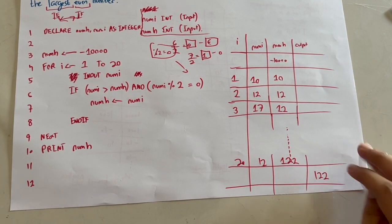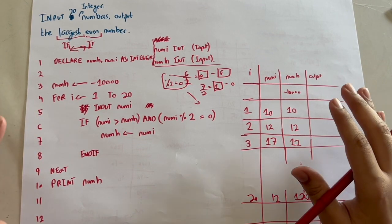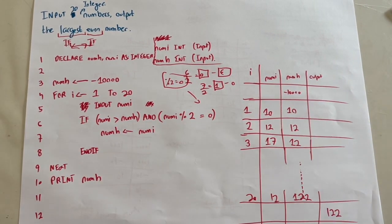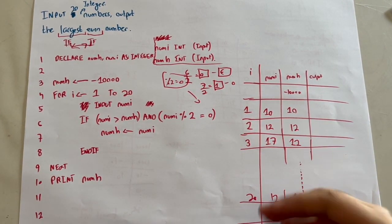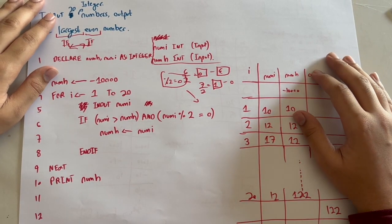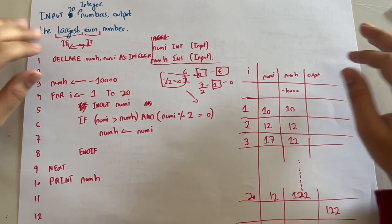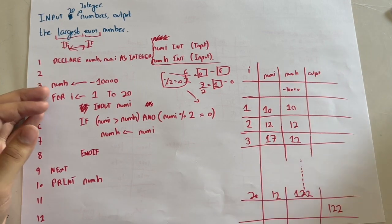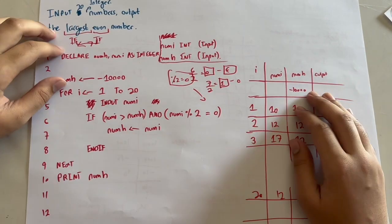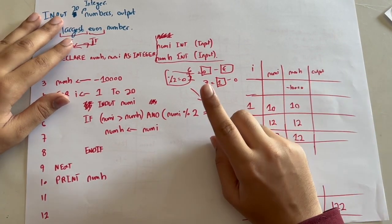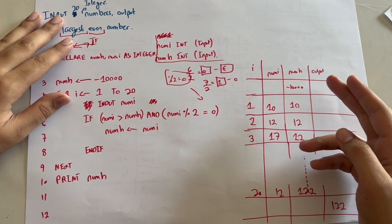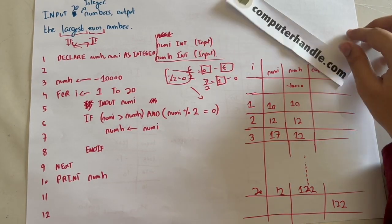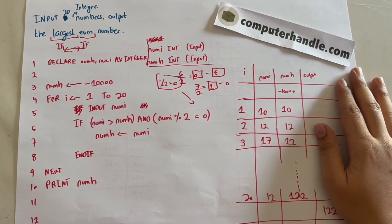That's how this question is solved. Try reading the question again, finish this lecture, and solve it on your own for practice. That completes Chapter 2. From the next lecture onward, we'll start the end-of-chapter practice questions — six in total: two easy, two medium, two hard. If you have any doubts on any concept, review those first before jumping into the final questions. Thanks everyone — founder of computerhandle.com signing off. Take care, bye.